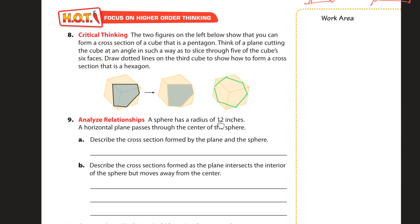Next, a sphere has a radius of 12 inches. A horizontal plane passes through the center of the sphere. Describe the cross section formed by the plane and the sphere. So let me draw this for you. We have a sphere, a ball. And it cuts through the center of this. So it cuts through the center. And this is 12 inches. So describe the cross section. Well, it's a ball. It goes around like that and through the front like that. So we're looking at the cross section is a circle with a diameter of 12 inches.